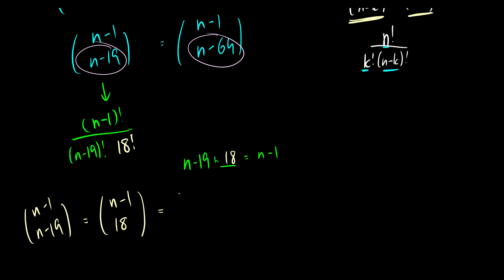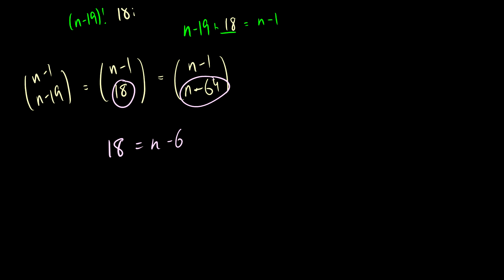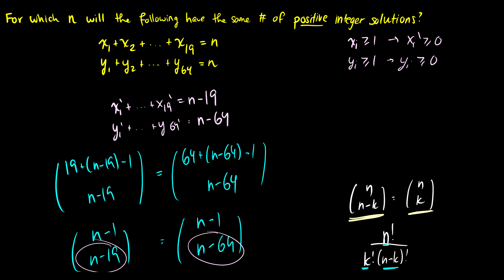So now we just have to see which number this is true for, where 18 is equal to n minus 64. So we can solve this: 18 equals n minus 64, so n is going to be equal to 82. So that is when both of these have the same solution. So if we go back to the top of the question here, they both have the same number of positive integer solutions when n equals 82.